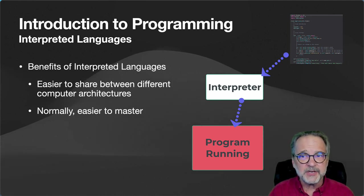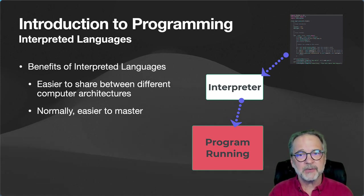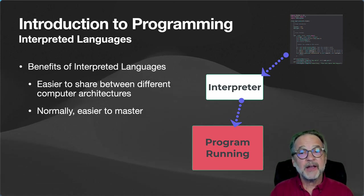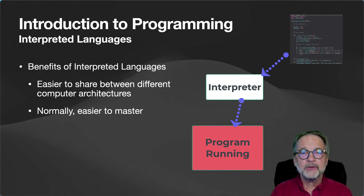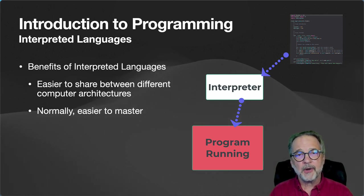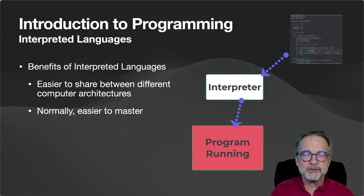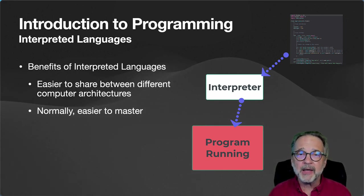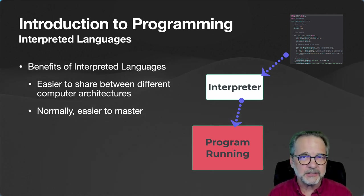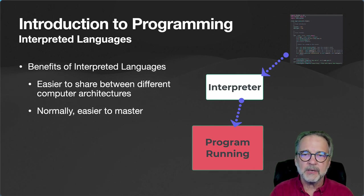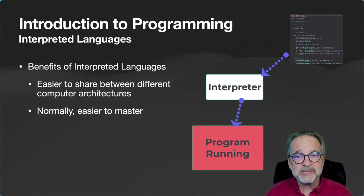The benefits of an interpreted language: it is very easy to share your program across different computer architectures — all you need is an interpreter written for that architecture. For example, Python has an interpreter on Mac, Windows, Linux, and Raspberry Pi. All those interpreters operate the same way, so you take your Python program and run it on any one of those architectures. That is a huge benefit of interpreted languages. And normally it is easier to master.